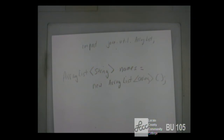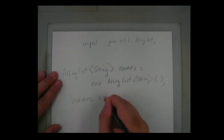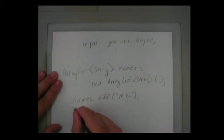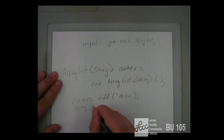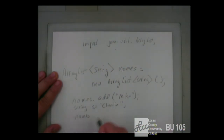How do you add to an array list? By saying names.add() and putting a string in it. Or: String s = "Charlie"; names.add(s). In the pizza example, we have an array list that contains pizzas. In the order class, the array list is called pizzas — it's a new ArrayList<Pizza>(). The add pizza function takes the pizza passed to it and adds it to the array list.